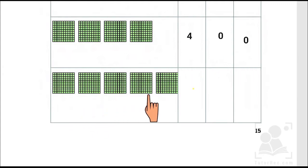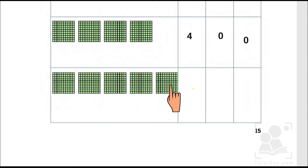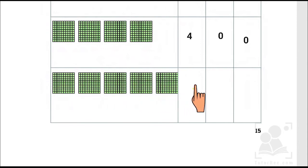Kids, in the last one we have one, two, three, four and five. It means we have five hundreds, zero tens and zero ones.